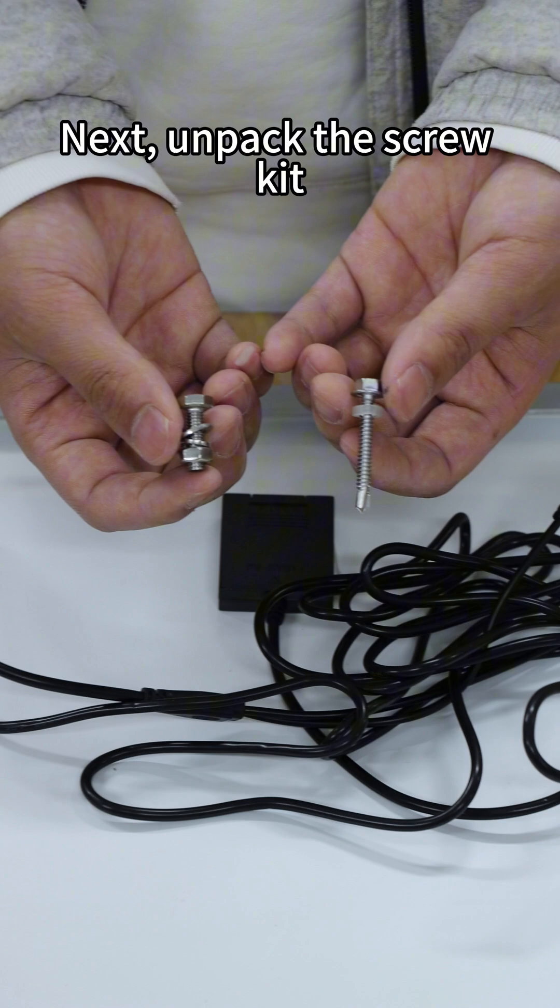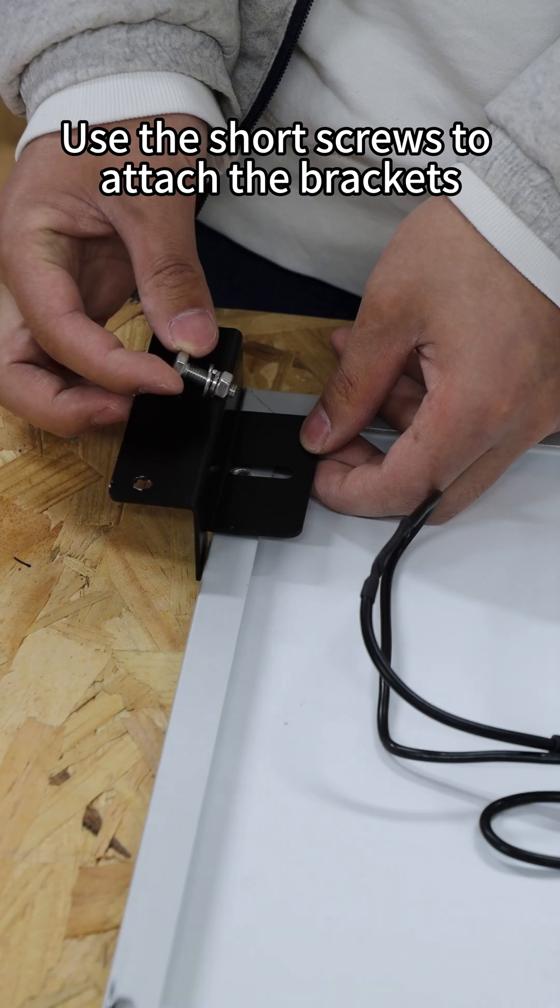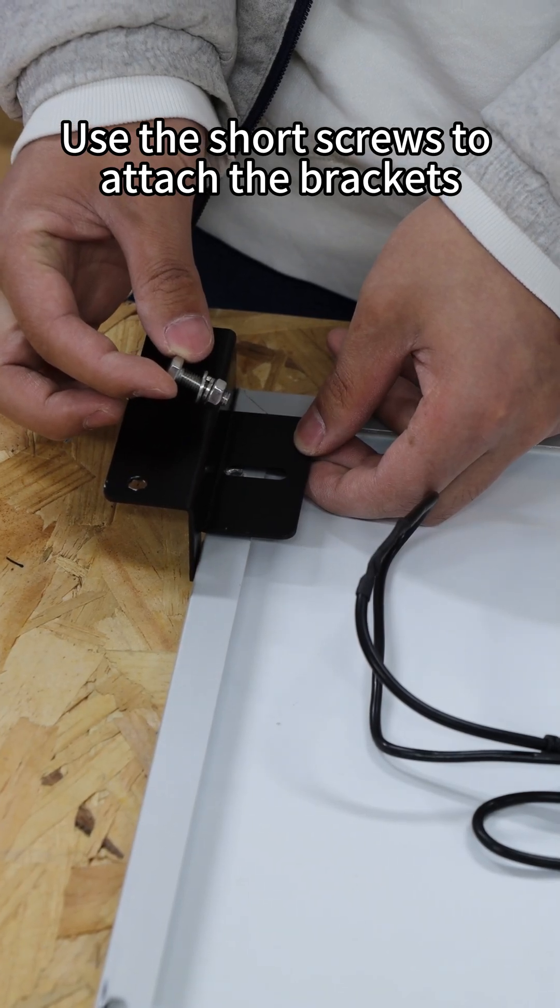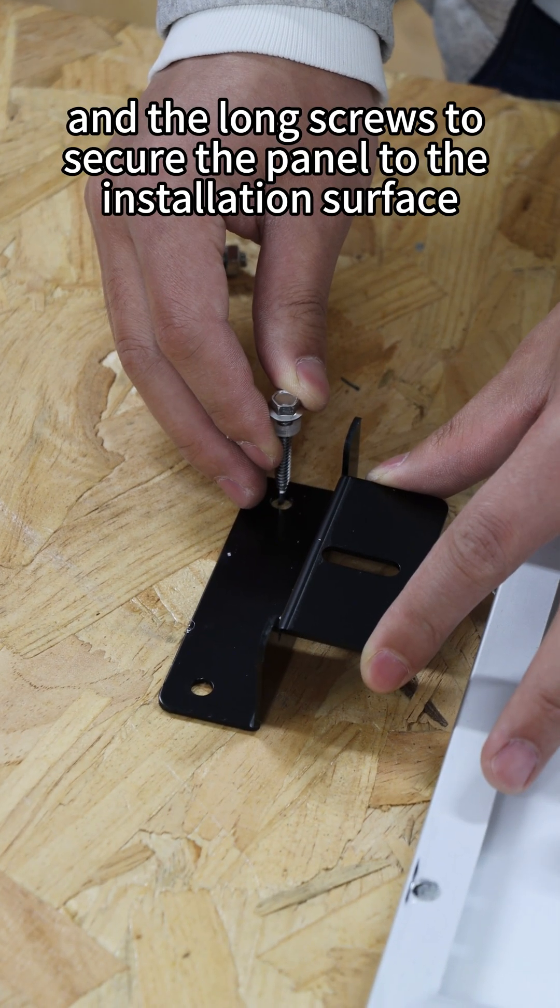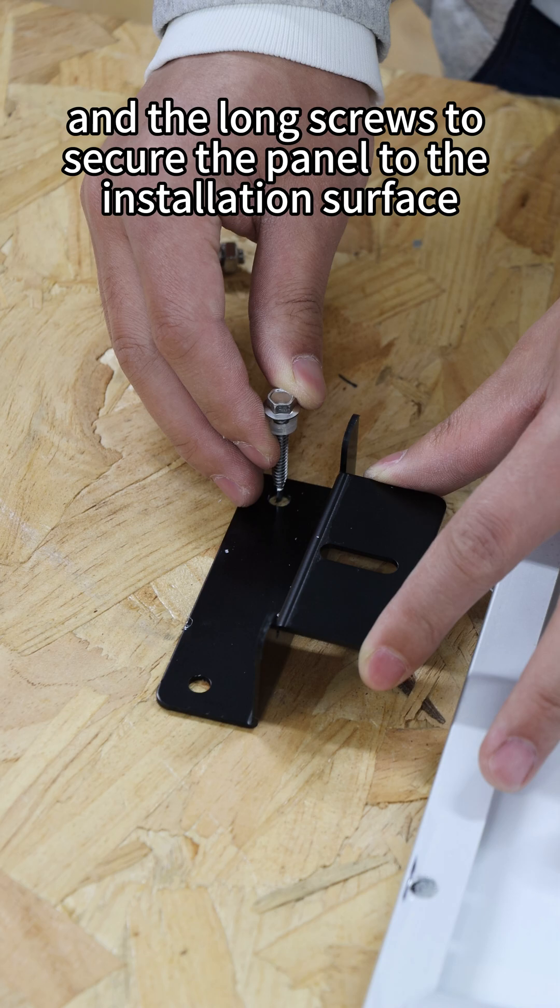Next, unpack the screw kit. Use short screws to attach the brackets to the PV panel frame and the long screws to secure the panel to the installation surface.